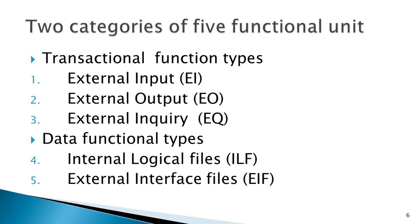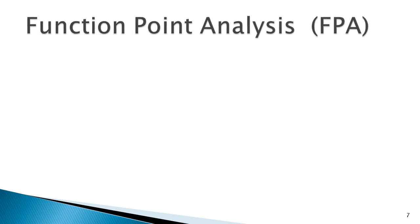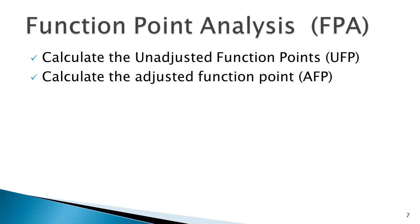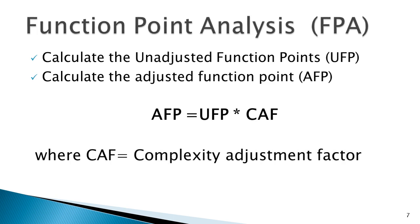The general approach that FPA follows: first, count the number of inputs, outputs, inquiries, internal files, and interfaces required, and calculate the UFP — Unadjusted Function Point. Then calculate the AFP — Adjusted Function Point — by multiplying these counts by an adjustment factor. AFP equals UFP multiplied by CAF, the Complexity Adjustment Factor.